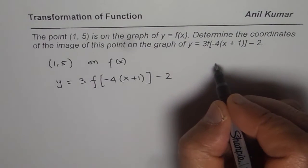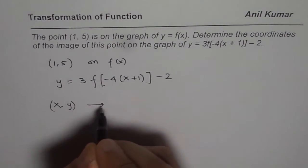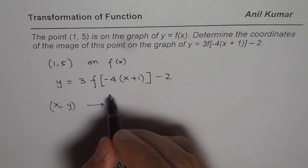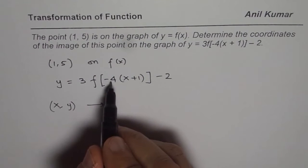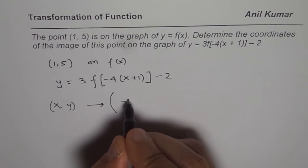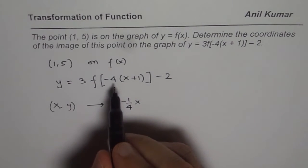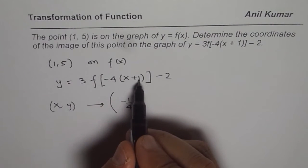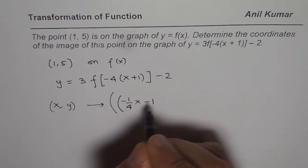Let us say the original point is (x,y). How does that get transformed? As far as the x values are concerned, they get multiplied by -1/4. So we get -1/4 of the x value, and then 1 is subtracted, so minus 1. That is how the x values will change.